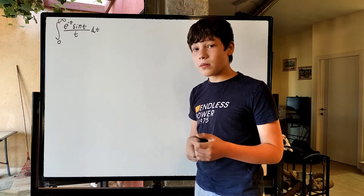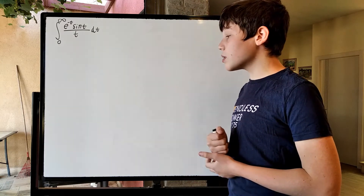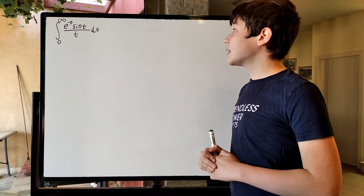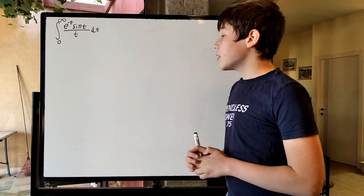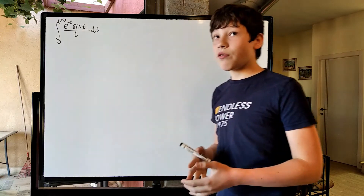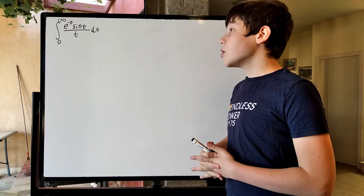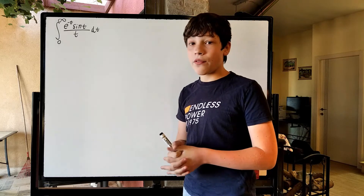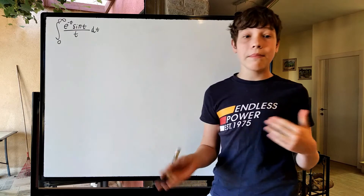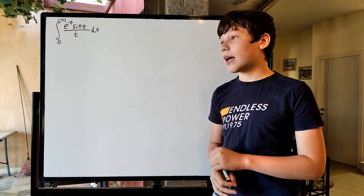We're going to run into some problems, but here we can use Feynman's trick, which essentially turns this into another function. Then we take the derivative of that function and hope that it simplifies so we can integrate it back again and get a simple answer.